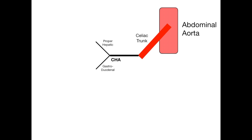The proper hepatic splits again into the left hepatic and the right hepatic. So the common hepatic gives way to the proper hepatic, which then splits into left and right hepatic — all the blood supply going toward the liver. Off of the right hepatic, you get the cystic artery. It's high yield to know that the cystic artery comes off the right hepatic artery, which is the case in most people.